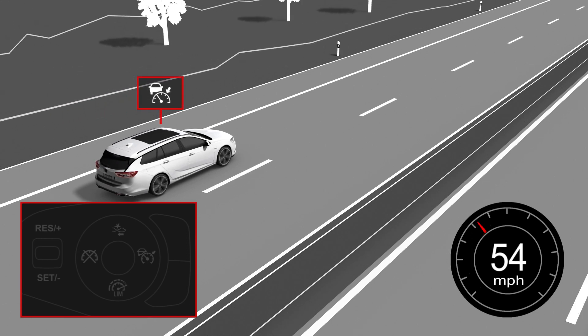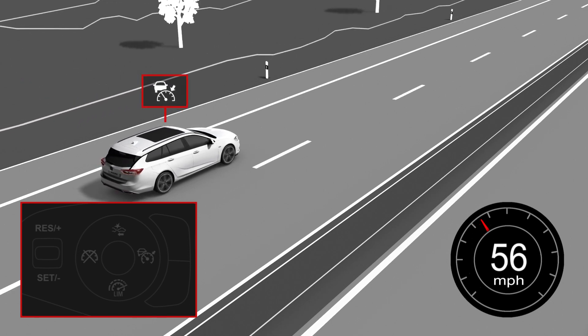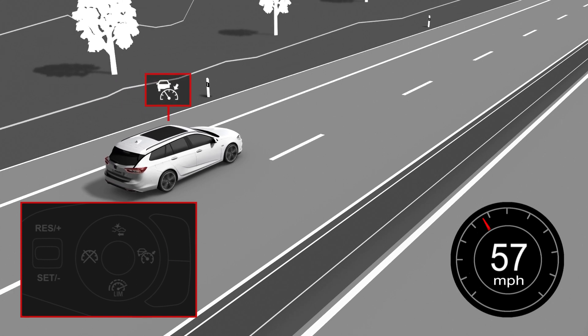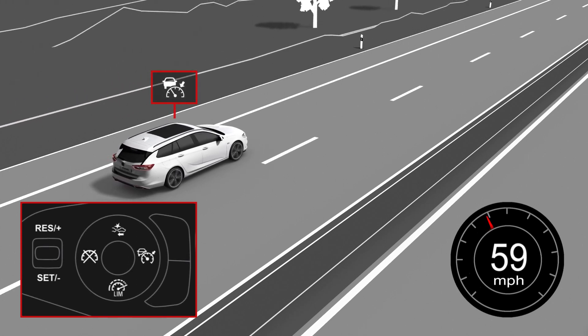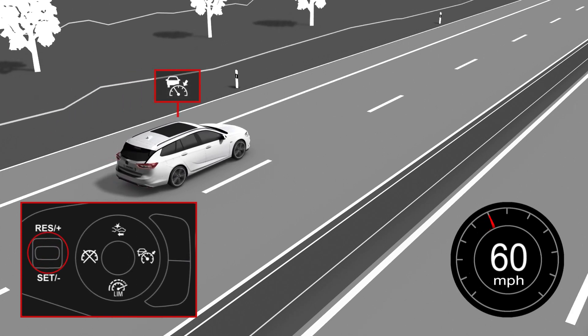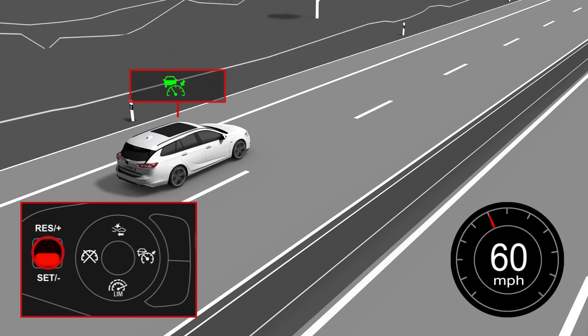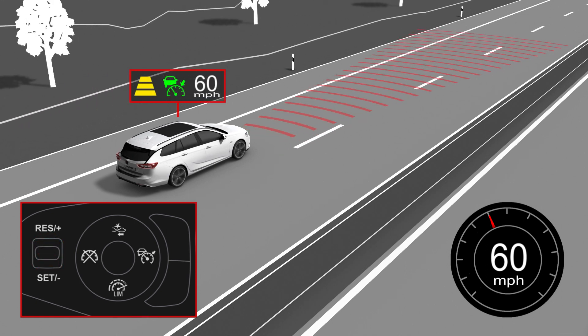For activation, drive the vehicle at the desired cruising speed and then move the thumb wheel to set. Your car will now maintain the set speed.